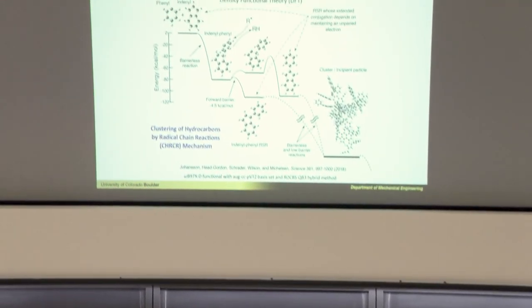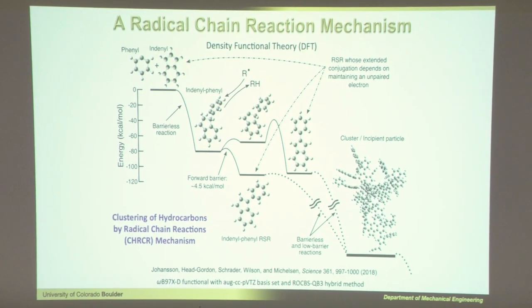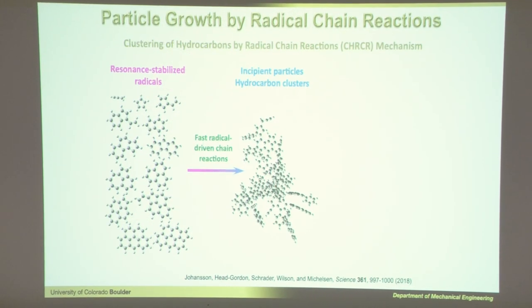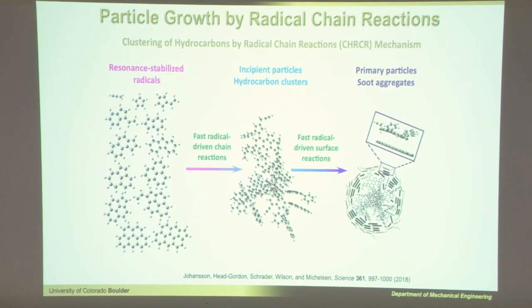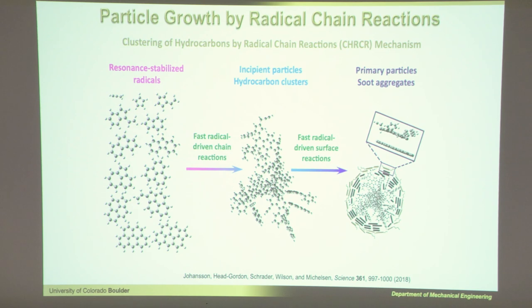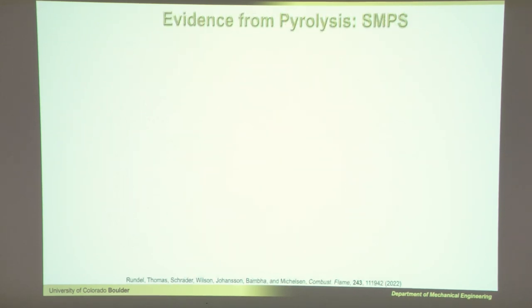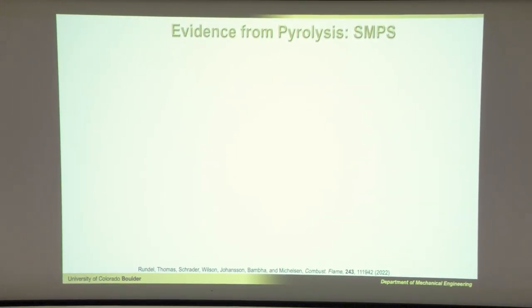We think we have these resonance-stabilized radicals that undergo a chain reaction, quickly generating an incipient particle. We also think RSRs are associated with the particle itself — maybe that's how we get surface growth. That's total speculation, total hypothesis. We need a kinetic model, but we don't have rate constants for any of these reactions, so we have to figure out how to generate those. We also need experiments to really test this hypothesis. We have some theory suggesting it should work, and experiments showing RSRs in the particles, but no kinetic model yet.